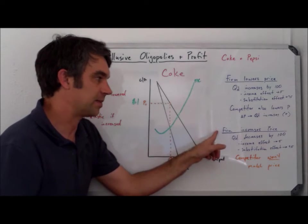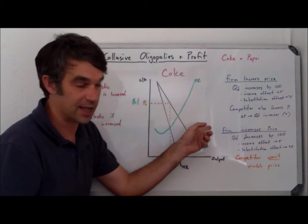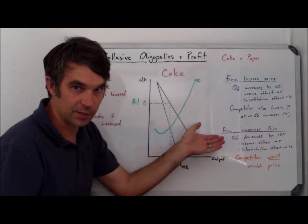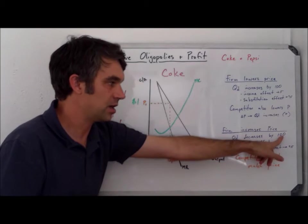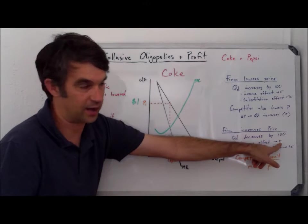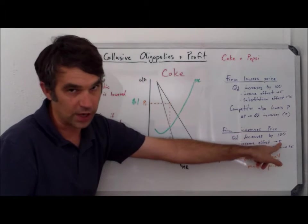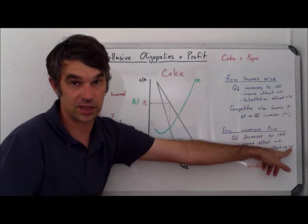Let's go opposite. So what if Coke now raises their price by 10% up to $1.10? Well, a lot of the same logic would be true. Quantity demanded is going to decrease by 100. It could be that five people just can't afford it anymore or choose not to buy it at the higher price. But it's more likely that a lot of people are going to switch over to the competitor that they see as being identical.